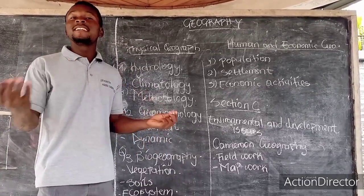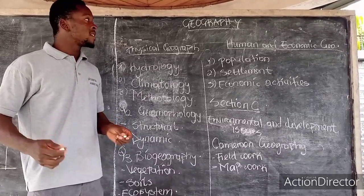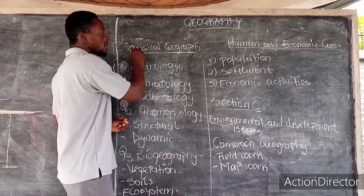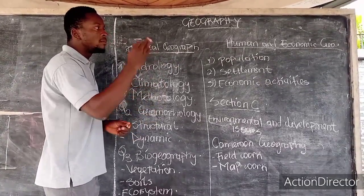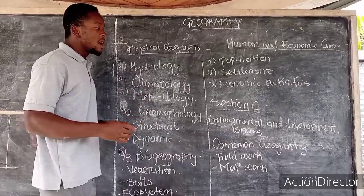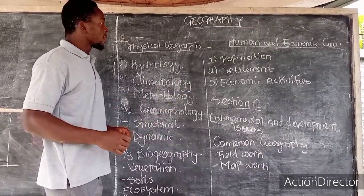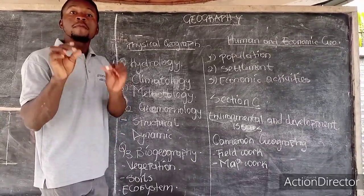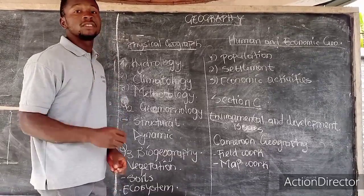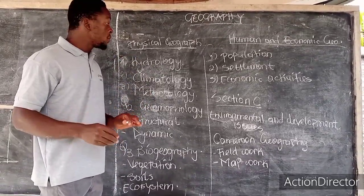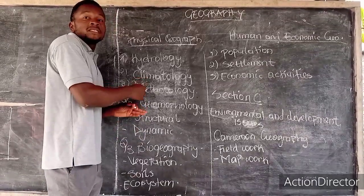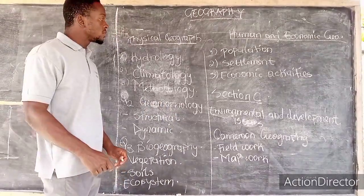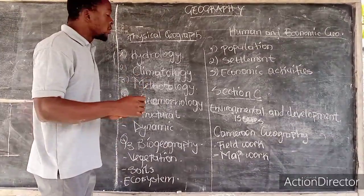It will be very easy for you to pass GCE 2021 Advanced Level. In Advanced Level we have branches like physical geography, human and economic geography, and environmental and development issues. On these various topics you are to answer four questions — that is talking about Paper 2. You are asked to answer just four questions in Paper 2, taking one from physical geography, one from human and economic, and one from development and environmental issues.